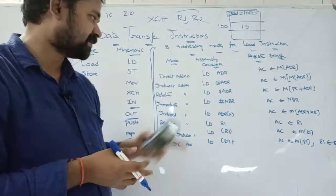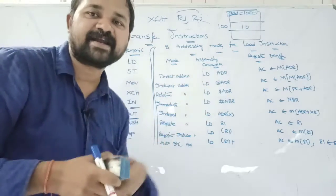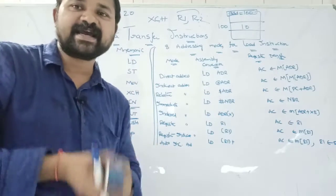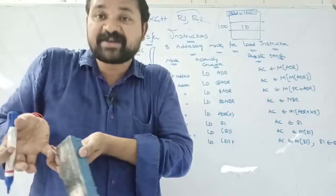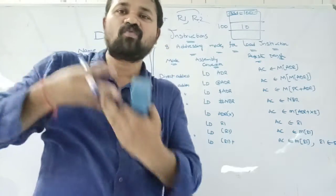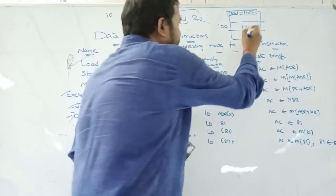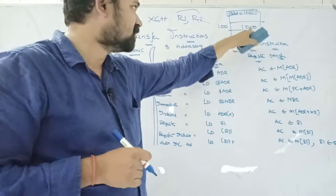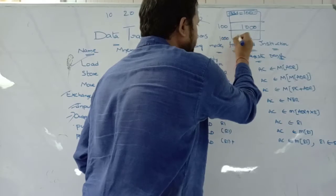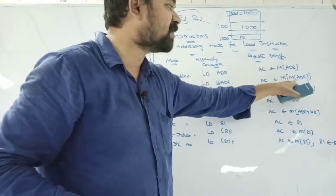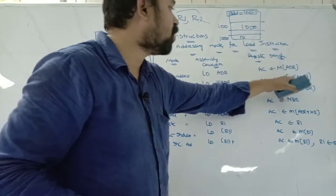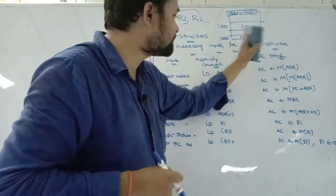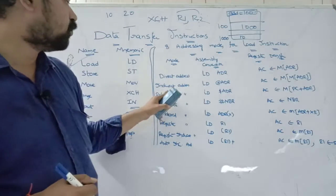For indirect addressing mode, the '@' symbol (at-rate) is used, and the mnemonic is 'LD @ADR'. Indirect address means the address field contains the effective address. For example, if ADR is 100 and M[100] = 1000, then 1000 is the effective address. We go to location 1000 to find the operand, so the statement is 'AC ← M[M[ADR]]'. If M[1000] = 10, then 10 is loaded into the accumulator.